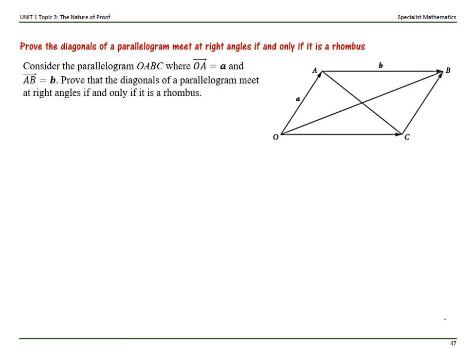This video proves that the diagonals of a parallelogram meet at right angles if and only if it is a rhombus. This proof is a vector proof, using vectors to show the proof. Consider the parallelogram OABC where the vector OA equals a and the vector AB is represented by b. Prove that the diagonals of the parallelogram meet at right angles if and only if it is a rhombus.